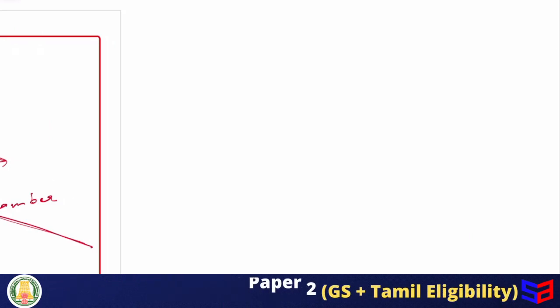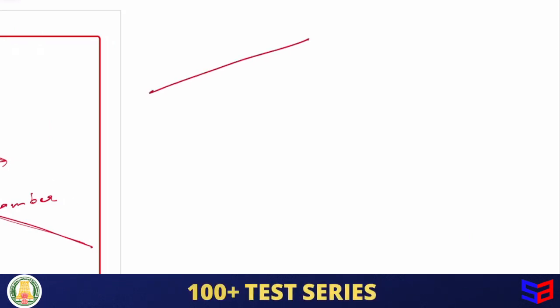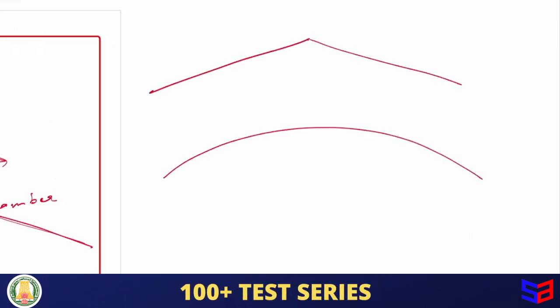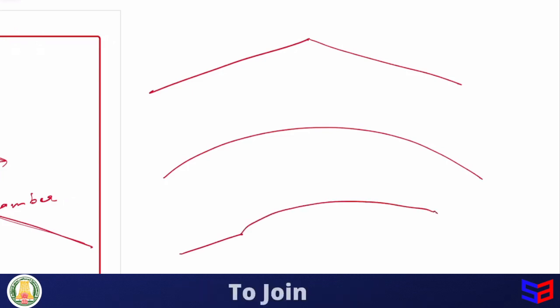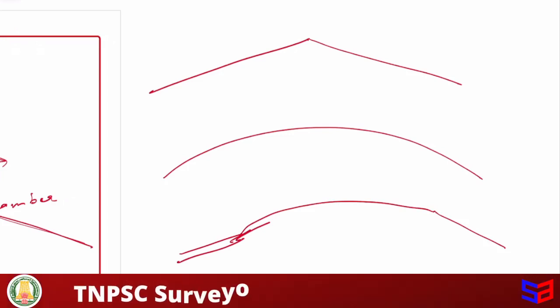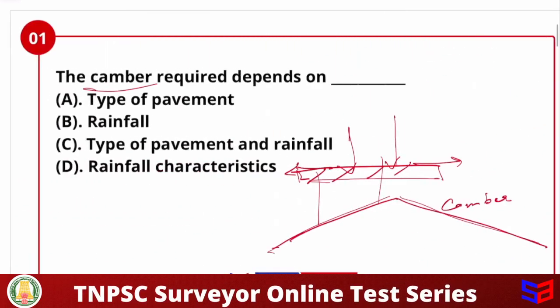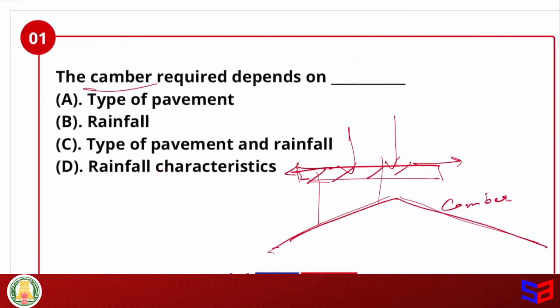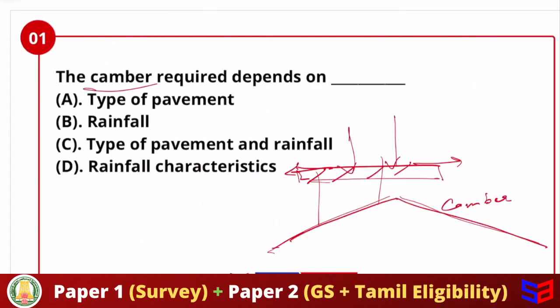Camber consists of different shapes: straight line camber, parabolic camber, and a combination of straight line and parabolic camber. There are different shapes available. Depending on the type of road — for example, a state highway has different vehicle speeds compared to a village road — the camber shape varies.